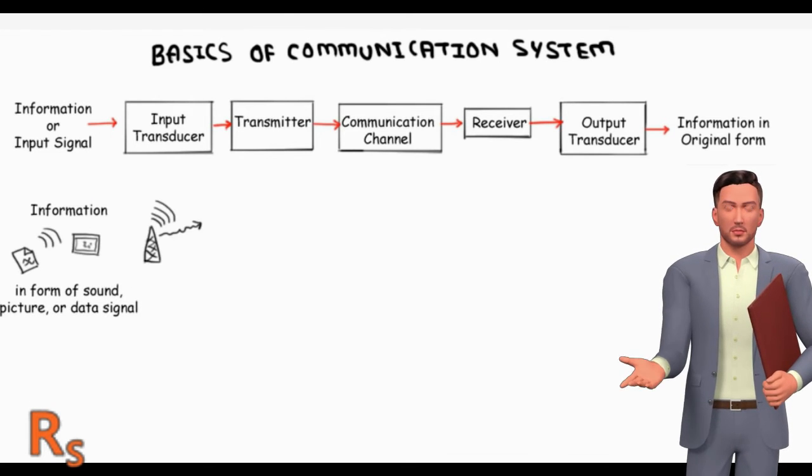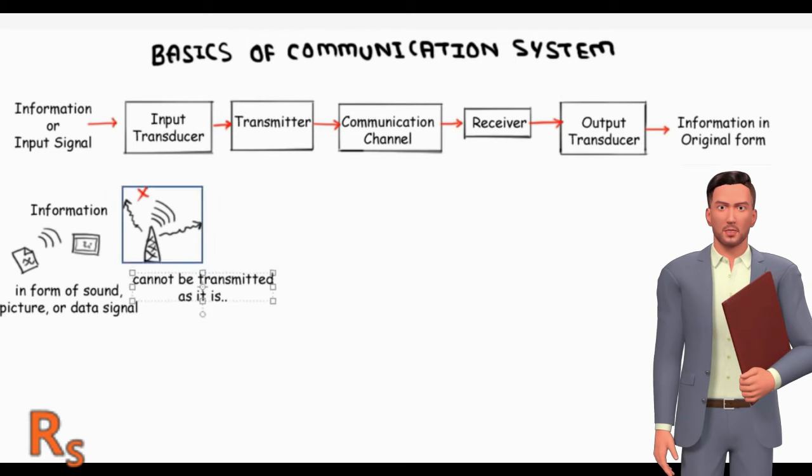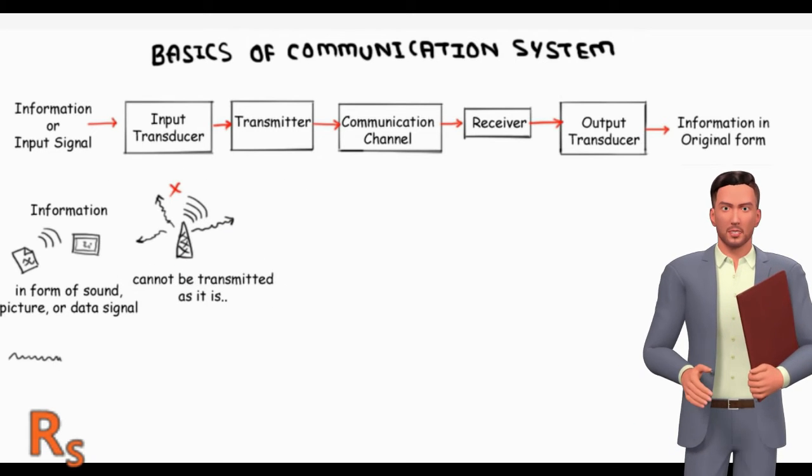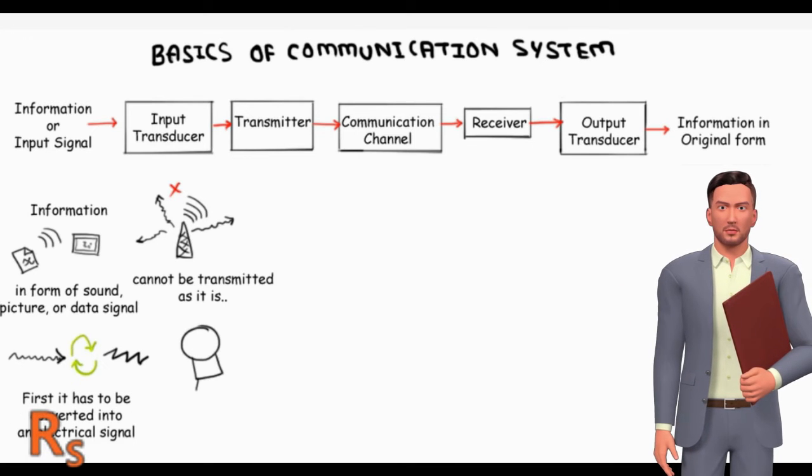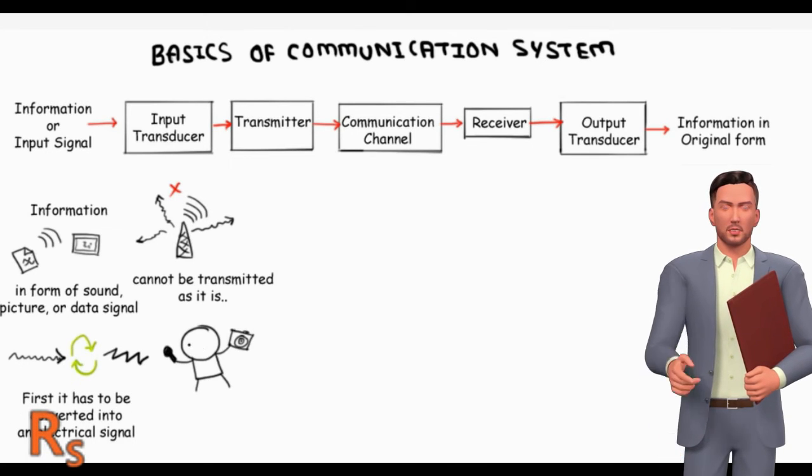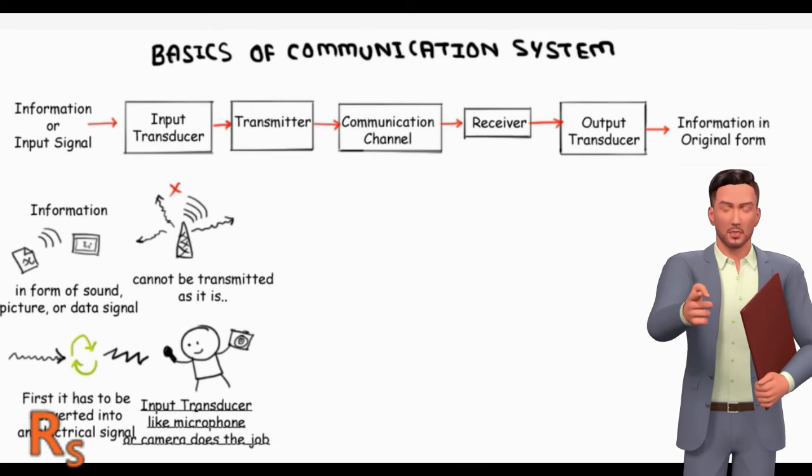In the simplest case, a messenger may transmit the information, but usually some technical means are used for it. Therefore, a communication system fundamentals may be defined as a set of facilities making possible communication by means of signals.